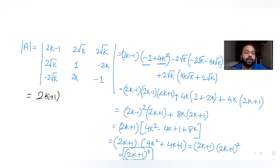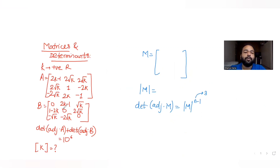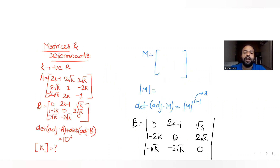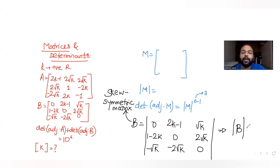Now for det(B): the diagonal elements are 0 and the non-diagonal elements are negatives of each other — for example, √k and −√k appear symmetrically. This means matrix B is a skew-symmetric matrix. For any odd-order skew-symmetric matrix, the determinant is always zero, so det(B) = 0.